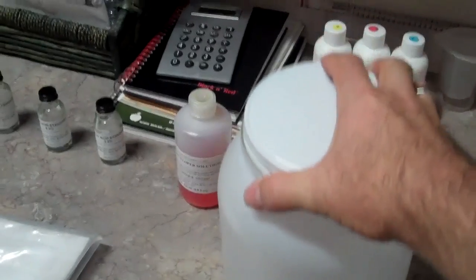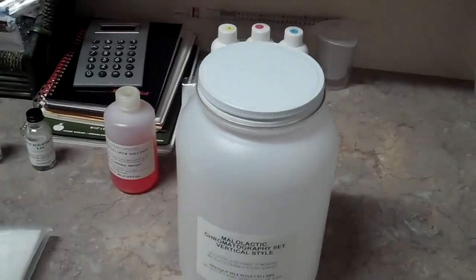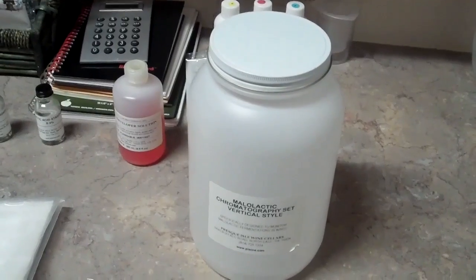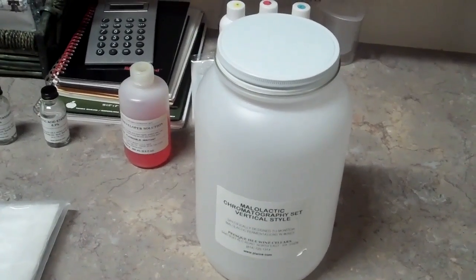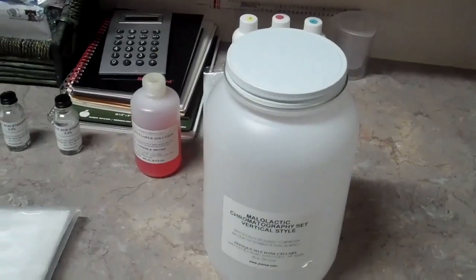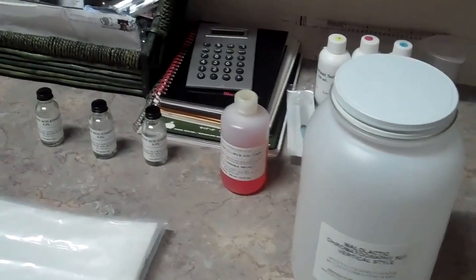This is the one-gallon container that we use to actually put the solvent and the paper in once we've put the different acid spots on the paper along with your wine samples.